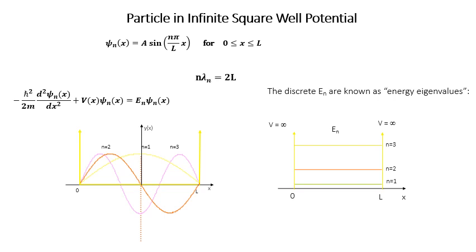For n equal to 1, the wave function looks like a half sine curve. For n equal to 2, it has one node in the middle, and for n equal to 3, you can see the pinkish curve. All wave functions start and end at zero within the potential well. Here v of x equals infinite outside and v of x equals zero in the middle region.